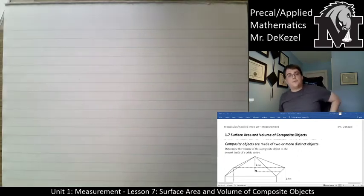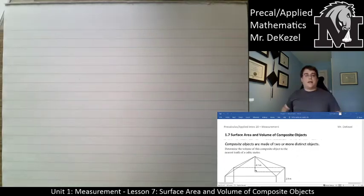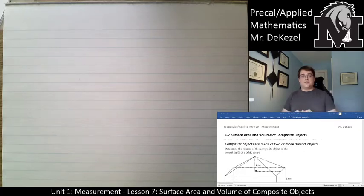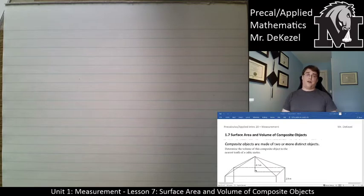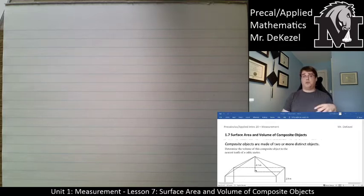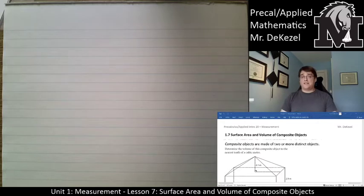Hello everyone, welcome back to the last lesson of this section. It is the measurement unit and lesson seven is surface area and volume of composite objects, essentially taking all the objects that we know of and have learned about so far, and finding their surface areas and volumes when you put them together in a whole bunch of different ways. So let's get right down to it.